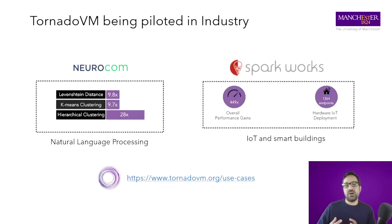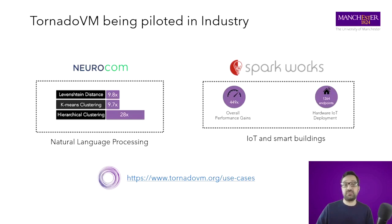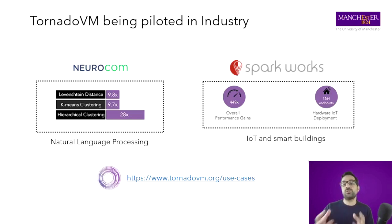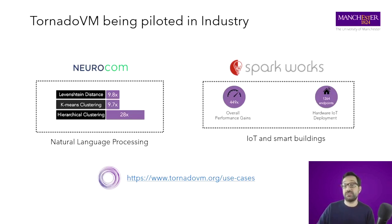Here are two industry use cases. First, Neurocon company in Luxembourg, running a natural language processing algorithm — they achieved 30x performance by running the hierarchical clustering algorithm on GPUs. Second, Sparworks company based in Ireland, processing IoT device data using a GP100 GPU for post-processing. They get up to 450x performance compared to Java.